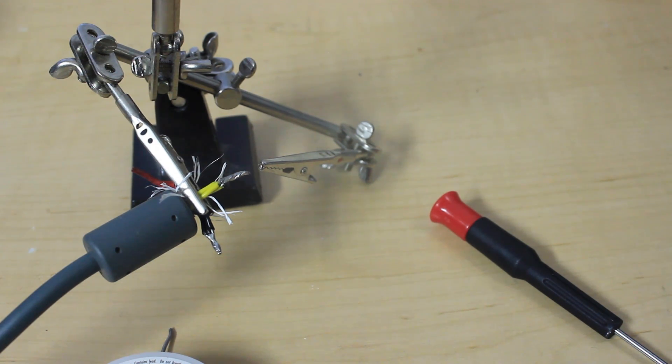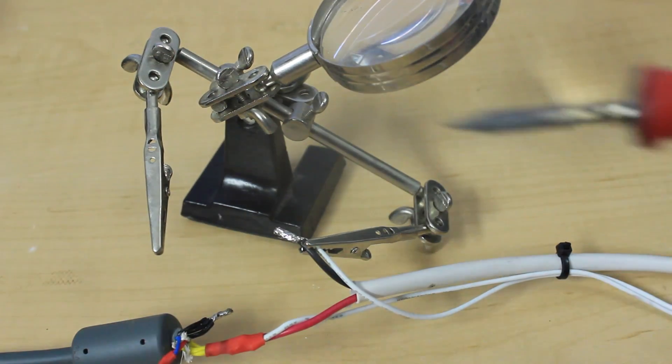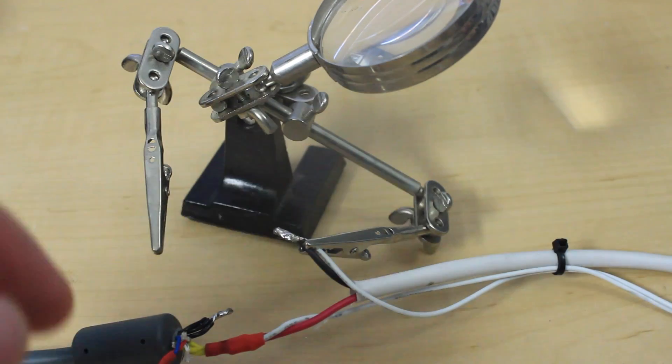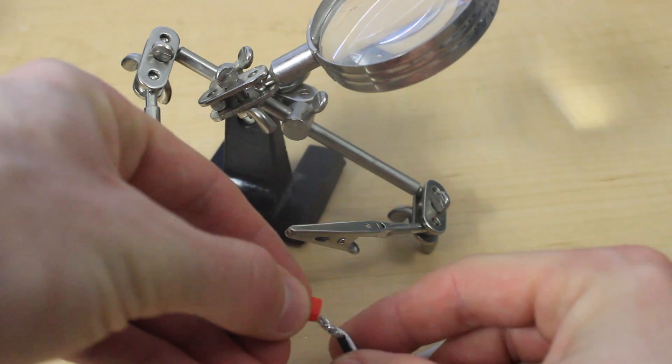I used helping hands. It was so much easier. So as you can see on the left side, I've got the helping hands holding the Xbox 360 power supply with all of the positive yellow cables that I've soldered together. And on the right side, I have the thick cable and the thin cable that I then soldered together as well.